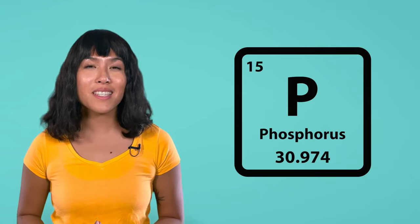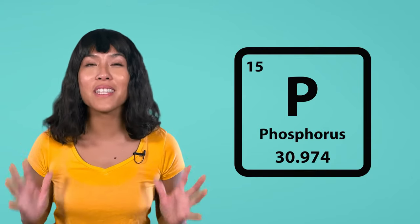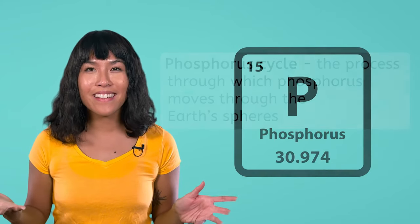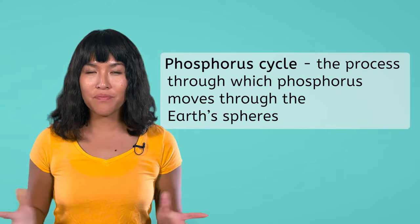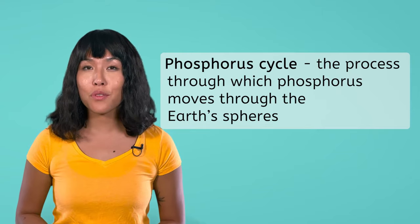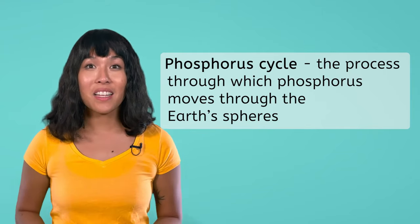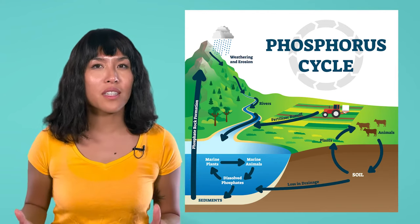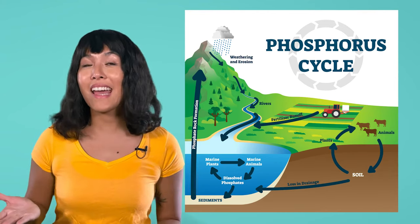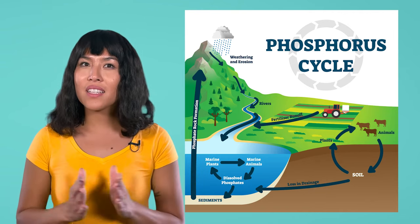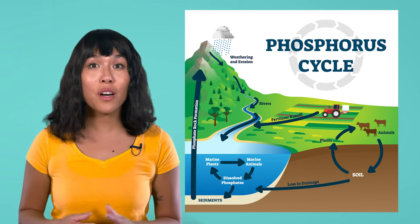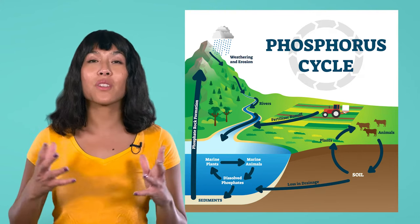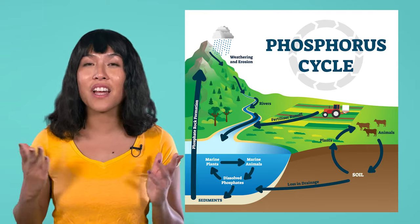Phosphorus is another essential element needed by all living things. It's in our bones, teeth, and in our DNA. The phosphorus cycle is the process through which phosphorus moves through Earth's spheres. Like the carbon cycle and the nitrogen cycle, the phosphorus cycle involves both living and non-living things. However, unlike these other cycles, the phosphorus cycle doesn't involve the atmosphere too much because phosphorus doesn't generally enter the gaseous state of matter.